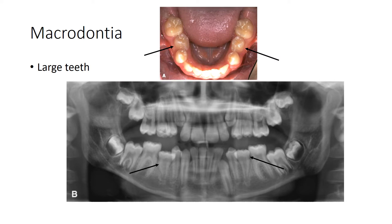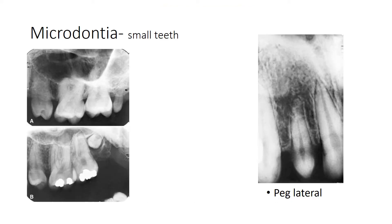Macrodontia is a condition where there is a larger size of the tooth. Here we are pointing out a molar and a premolar — the premolar looks really wide and larger than the adjacent premolar, and this is macrodontia of the premolar bilaterally. Microdontia, on the other hand, is a terminology used for a smaller tooth. The examples in A and B are microdont third molars, one erupted and one still impacted. Peg lateral is another common example of microdontia where the lateral incisor is more conical or peg-shaped and smaller in size.